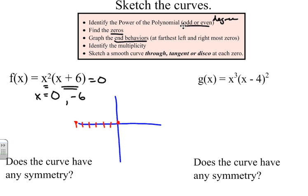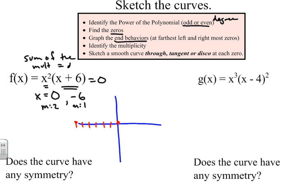Now we look at the multiplicities — that means how many factors of each zero are being used. In this case, x squared means x times x, so zero has a multiplicity of two. The second zero has a multiplicity of one. When you add the sum of the multiplicities, that equals the degree of the polynomial. So two plus one equals three — we have a degree of three, a cubic.